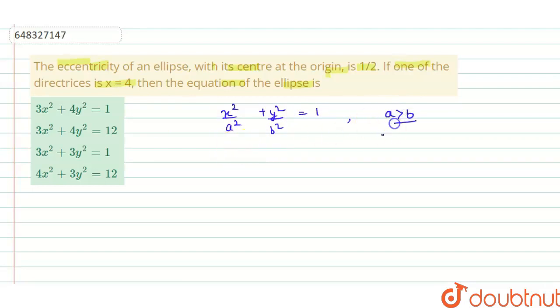From the equation we can clearly know that as directrix is x equals four, now we know that in this case when major axis is x axis, directrix is x equals a by e.